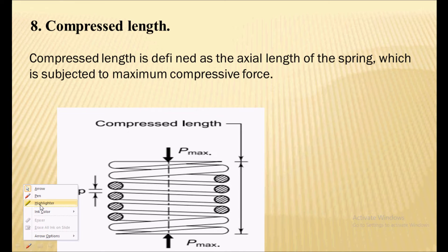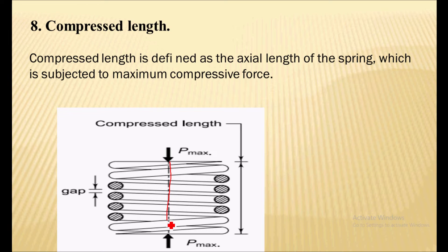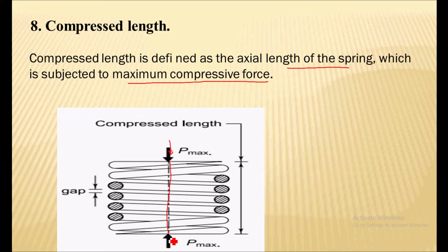Next is the compressed length of the spring. It is defined as the axial length of the spring when it is subjected to the maximum compressive force. A maximum load is applied on the spring, and the axial distance is the compressed length. During compressed length, there is still a gap between the coils.